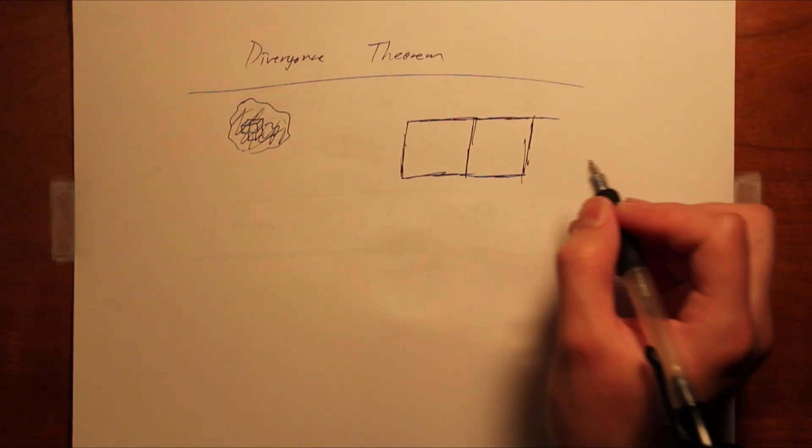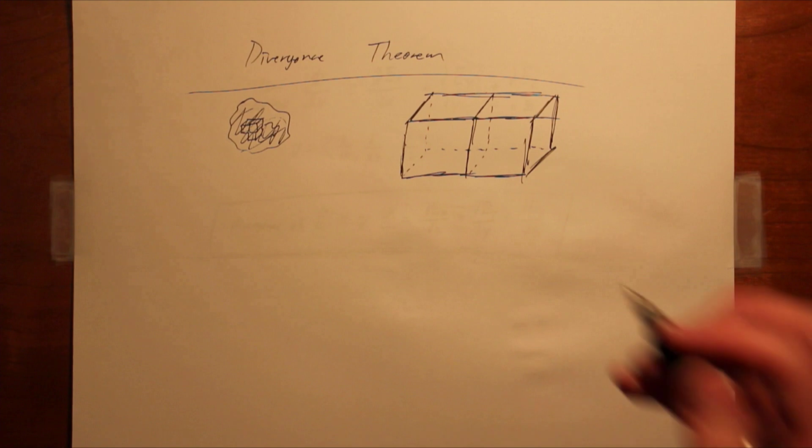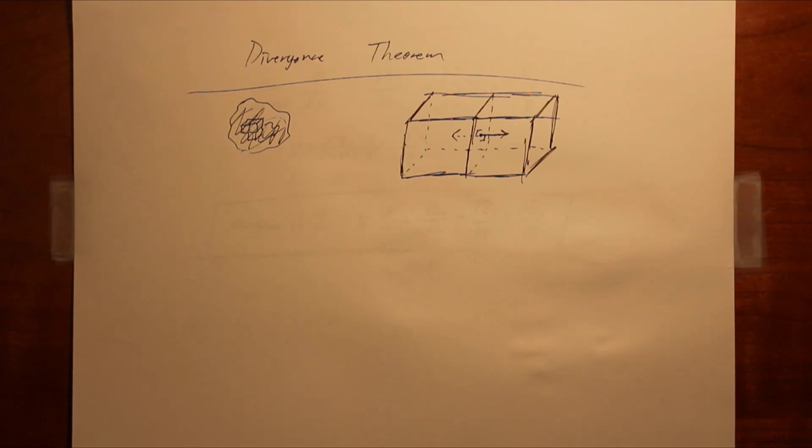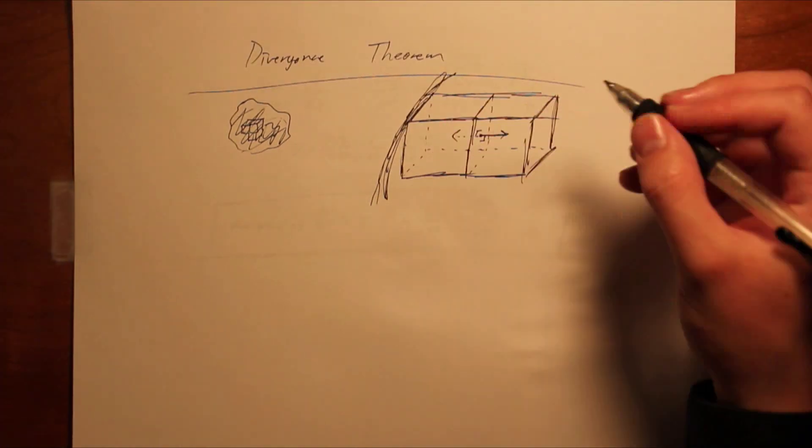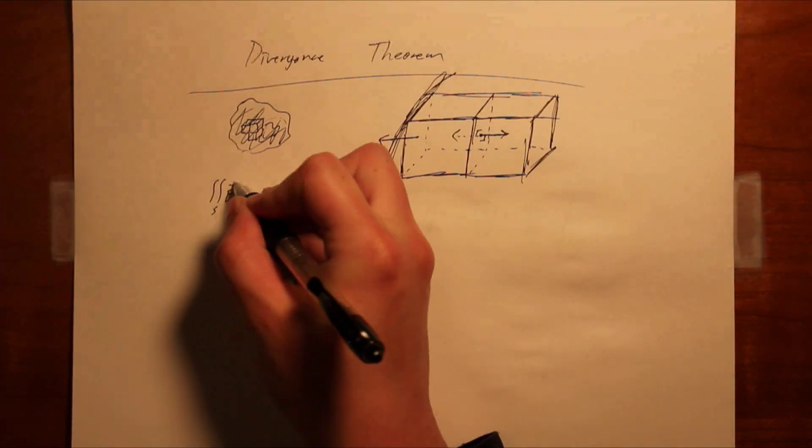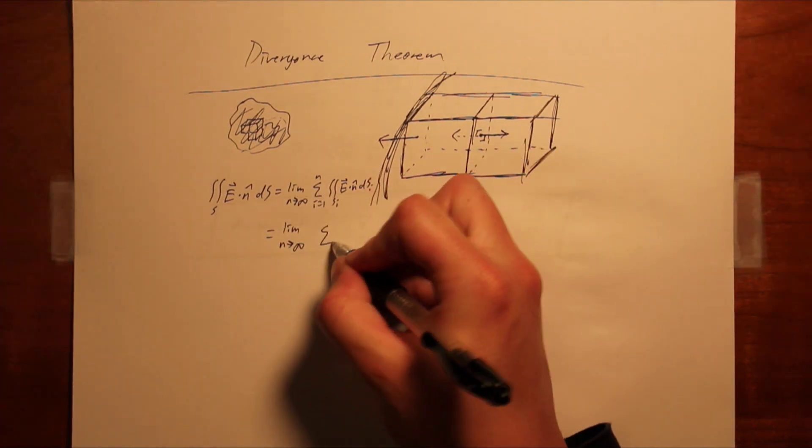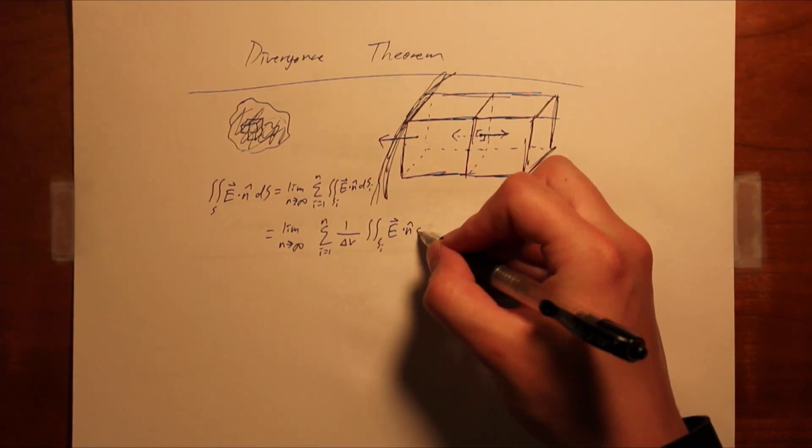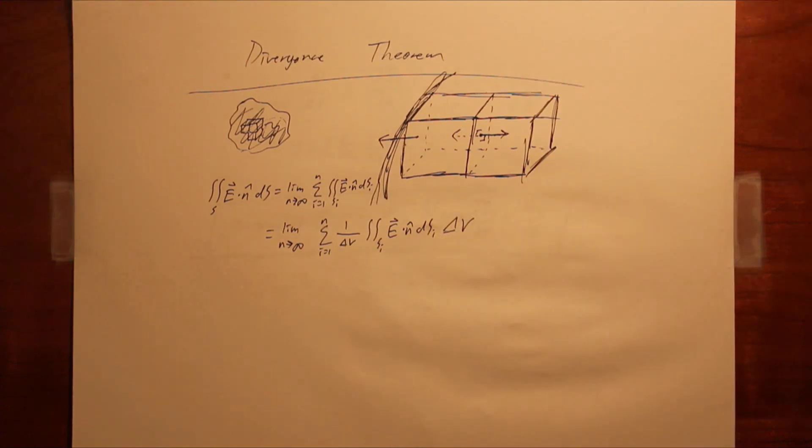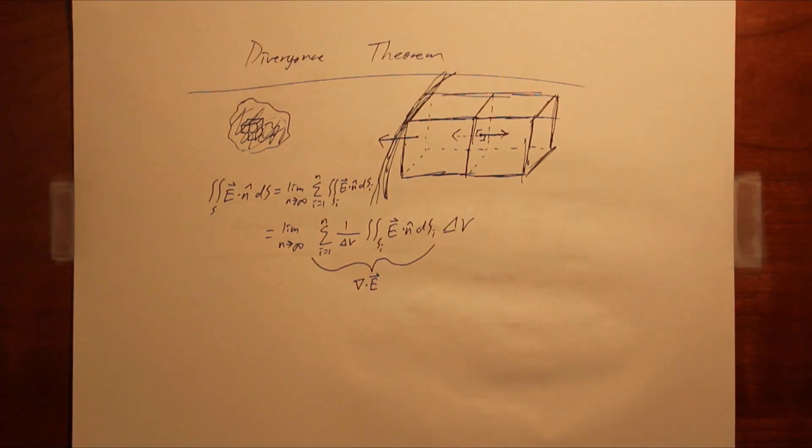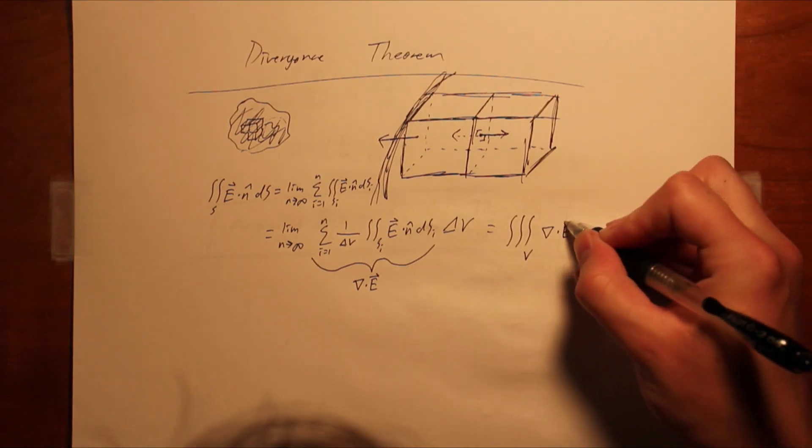To understand this, imagine two adjacent sub-volumes that share a face. The flux through one sub-volume associated with the shared face will cancel with the flux from the same face, but through the other sub-volume. The only place where this cancelling does not occur is at the outer boundary of the surface, and thus the total flux is indeed the flux through the original surface. By multiplying this expression by delta v over delta v, and using a little bit of manipulation, we can arrive at something that looks like it might contain the divergence. Taking the limit of this expression as delta v goes to zero, or equivalently as the number of sub-volumes goes to infinity, we see that the integrand does, by definition, become the divergence, and the sum becomes a triple integral over the volume contained by the surface.